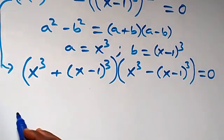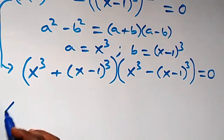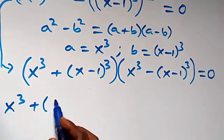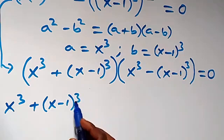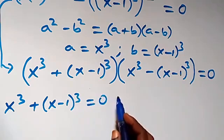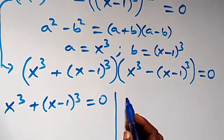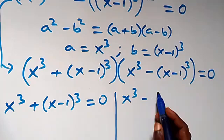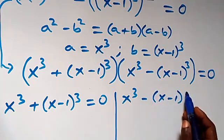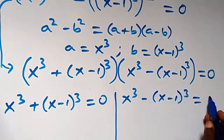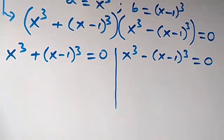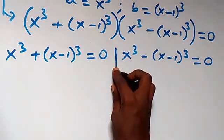From what we have, we have two possible cases: Case one is x cubed plus bracket x minus one cubed equals zero, or Case two is x cubed minus bracket x minus one cubed equals zero.